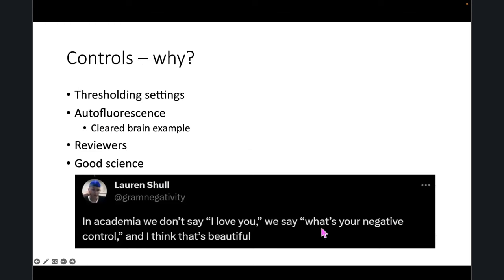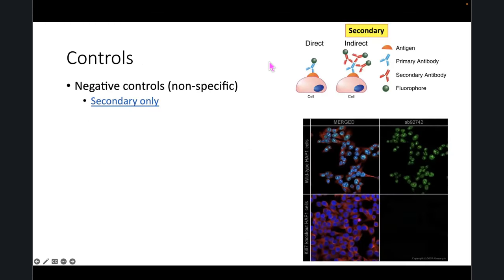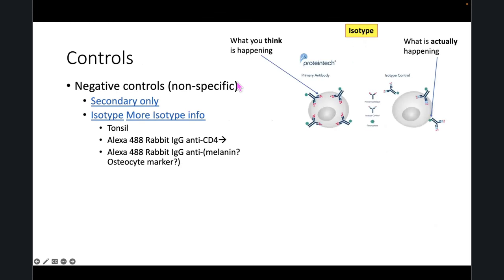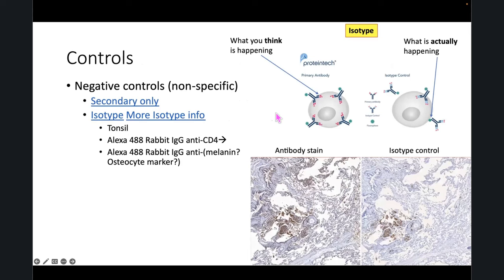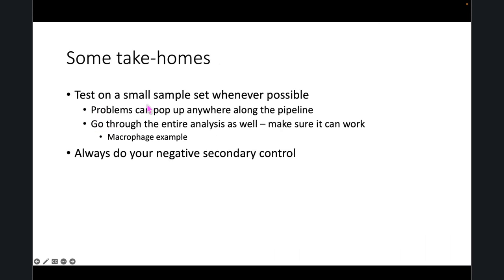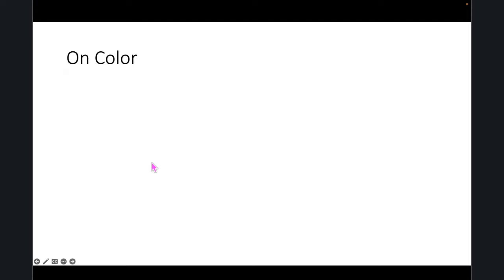Controls are good. What's your negative control? Examples include secondary isotype controls — the slides have more details on what those actually are and how they work. That was the SARS-CoV example you saw. Test on a small sample set whenever possible. When planning an image analysis project, problems can pop up all along the pipeline. Don't invest all of your tissue from rare samples and go all in on the first try, only to find out you have too much autofluorescence or need to bleach it. Always do your negative control.